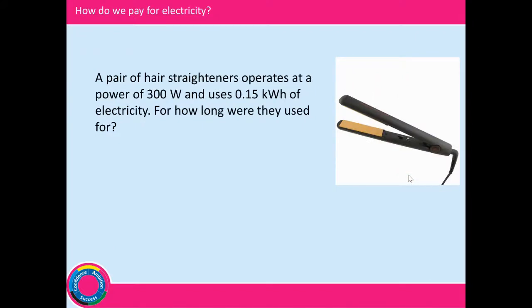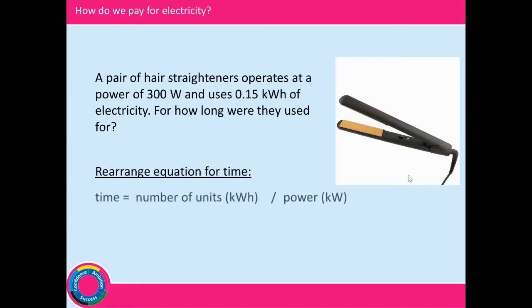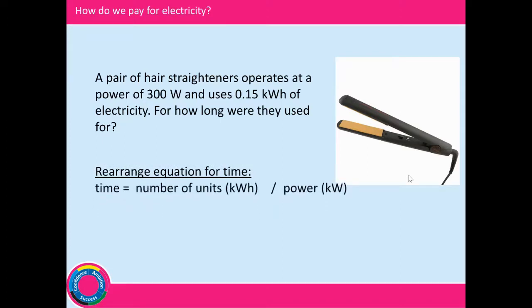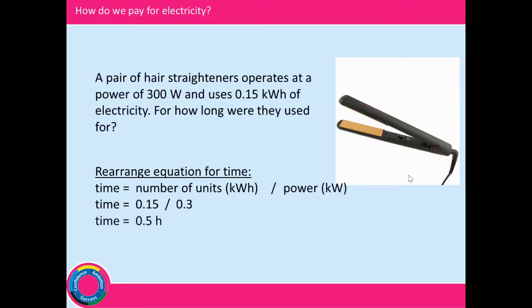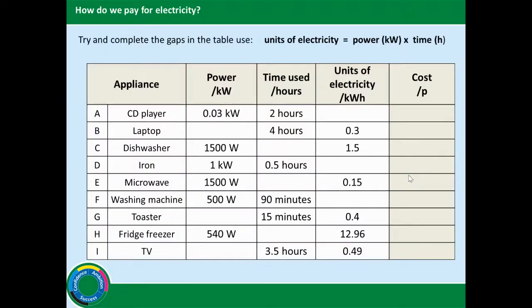A pair of hair straighteners operates at 300 watts and uses 0.15 kilowatt-hours of electricity — for how long were they used? Time equals kilowatt-hours divided by power: 0.15 ÷ 0.3 = 0.5 hours, so they were used for half an hour. Now try to complete the gaps in the table — the ones in white — and see if you can fill those in.